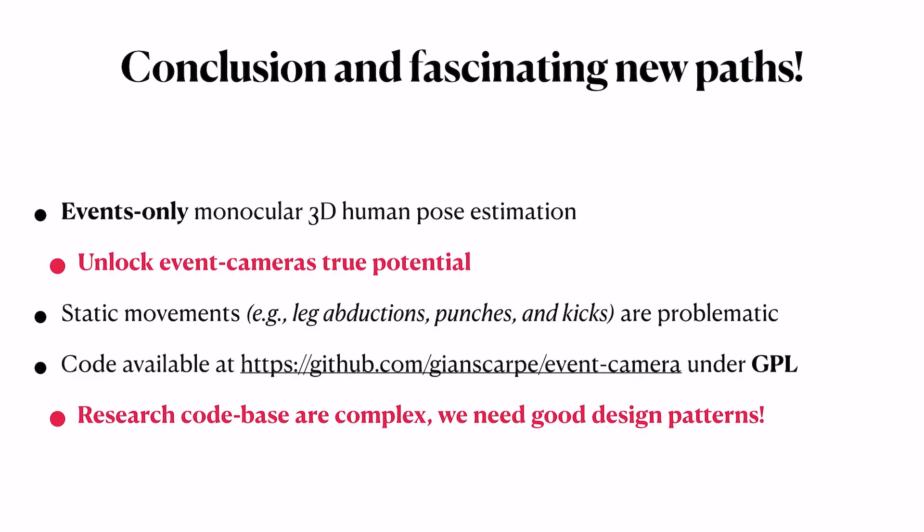And this leads me to the conclusion. I think event-only monocular human pose estimation is feasible, but static movements like leg abduction or punches are still problematic, and we really need to find new ways to use event cameras and to combine event streams with standard RGB sensors and other types of sensors. I also think, and this is related to PyTorch Lightning, that research code bases are really complex. In particular, if you work in multimodal or new ways to combine different types of information, if you have different synchronous or asynchronous data, you really need to have good design patterns to create research and complex code bases and reproducible research.